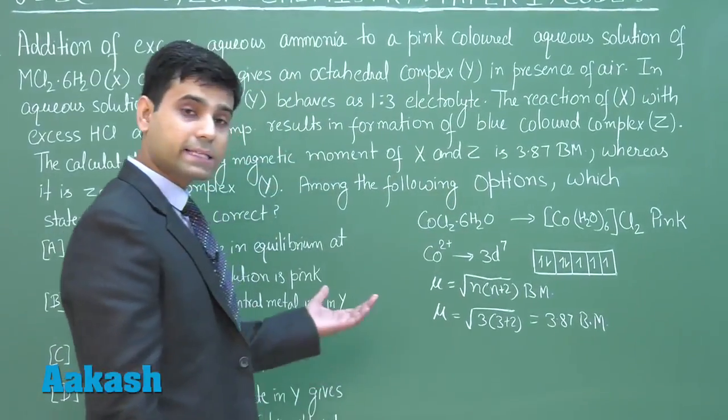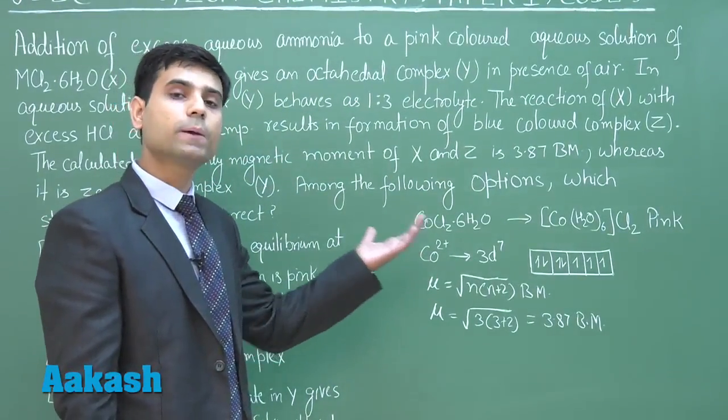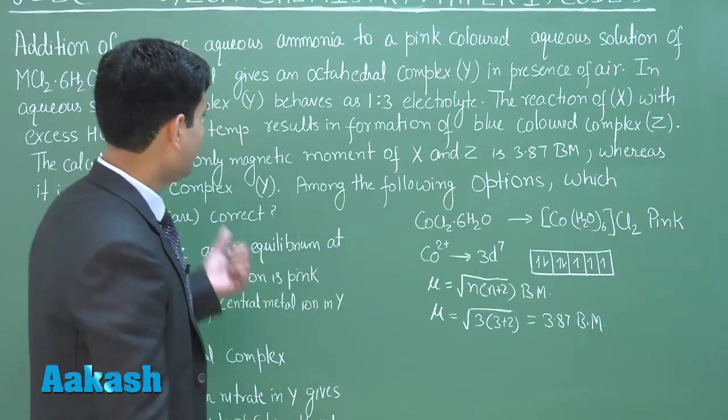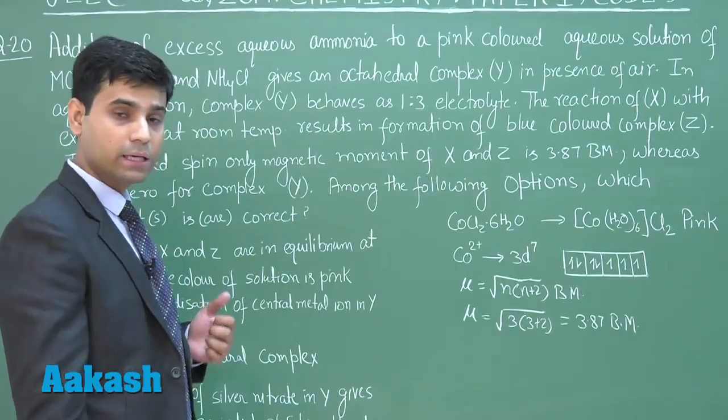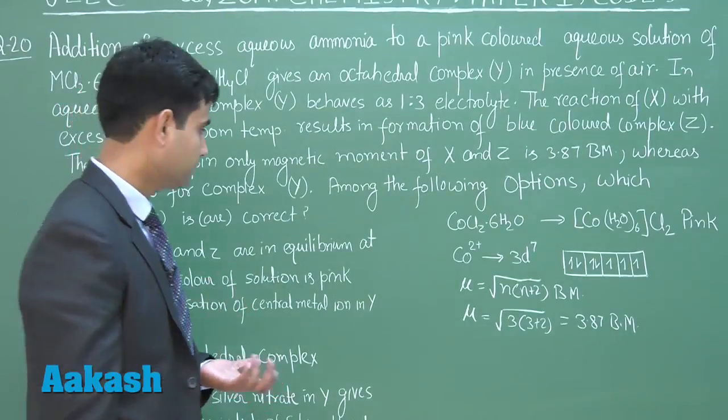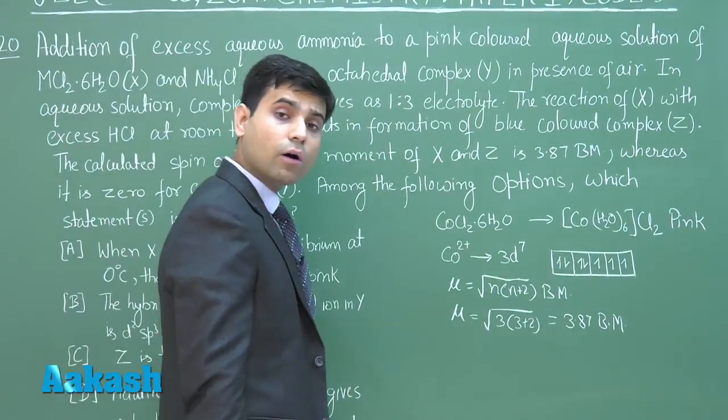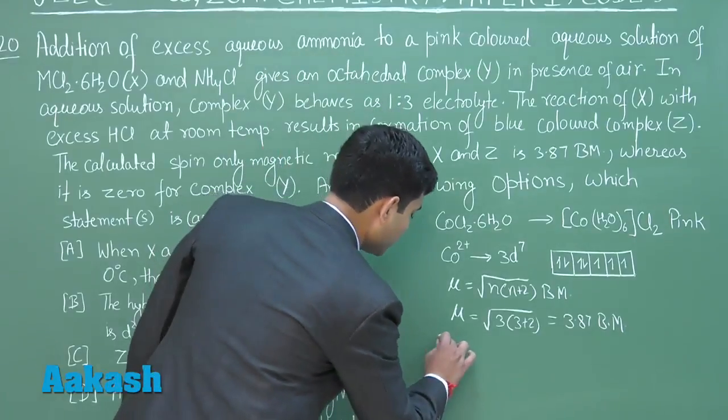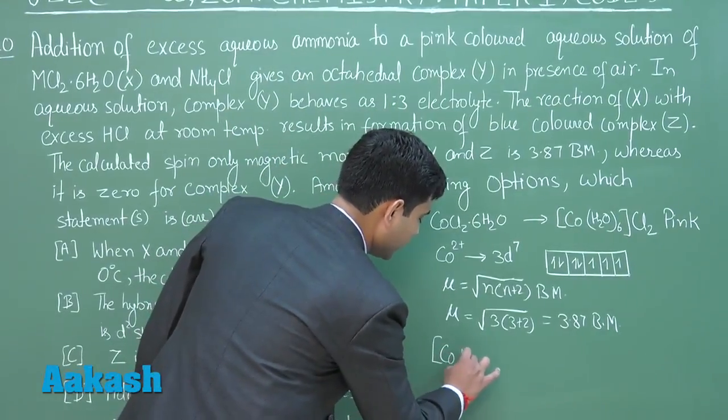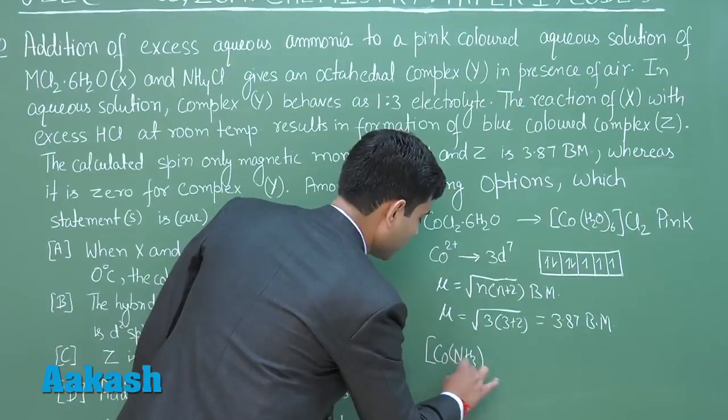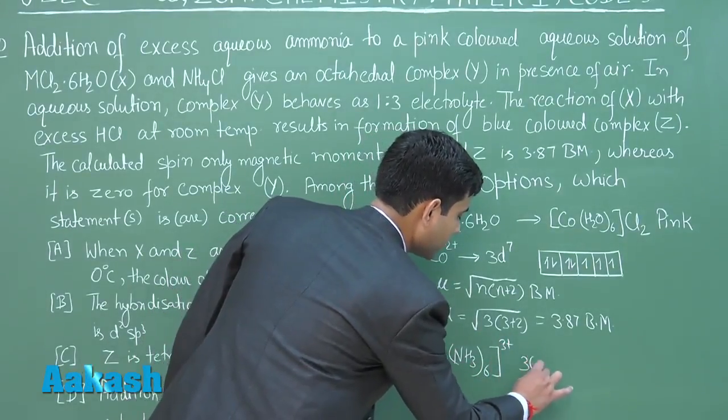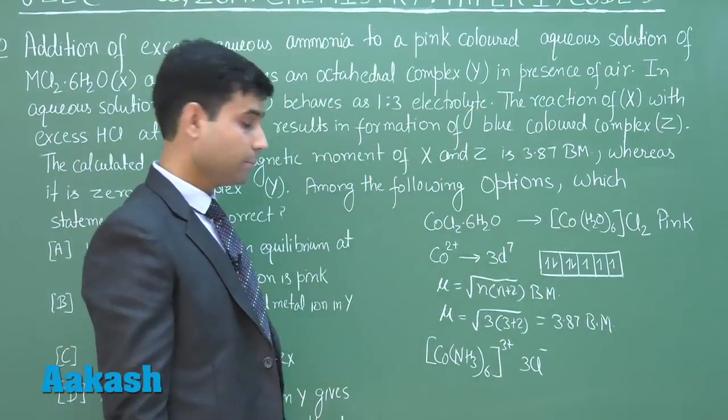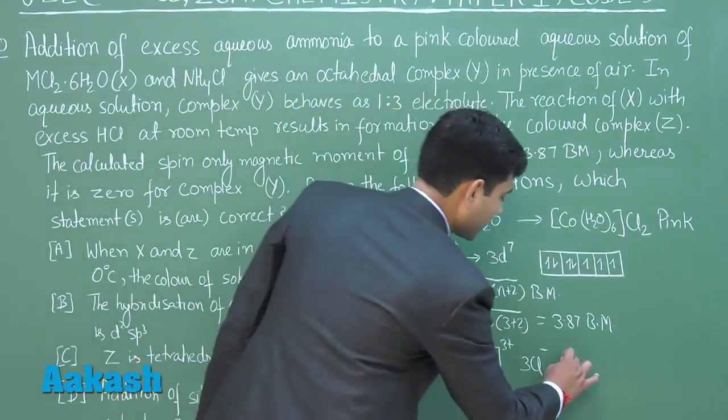X has 3.87 Bohr magneton spin-only magnetic moment. From X we get Y in presence of air and NH4Cl. This means ammonia complex is forming. Air will oxidize it forming [Co(NH3)6]3+ 3Cl-. This is our Y.